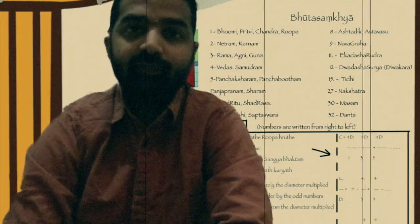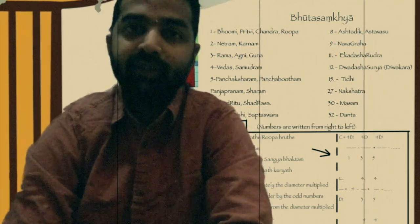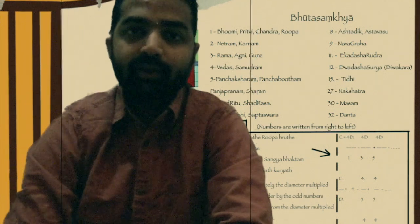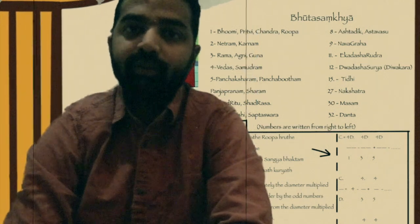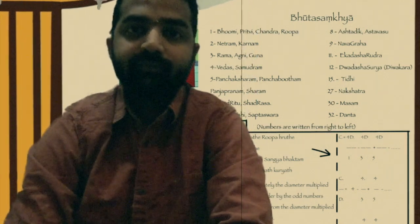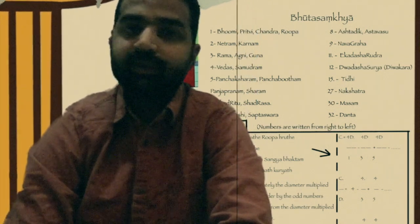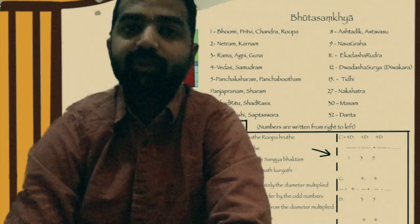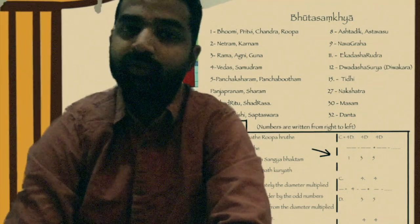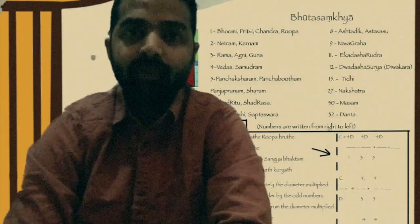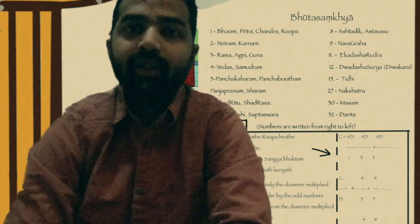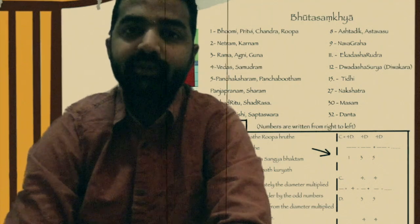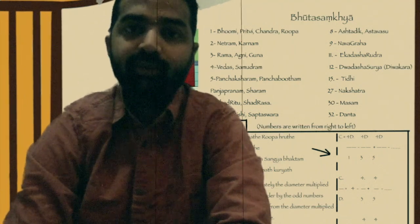Danta — we have got 32 teeth — so, teeth or Danta represents number 32. That's it — very simple. We have learnt the Bhuta-sangya number system. Now, let's take a practical example of the Bhuta-sangya number system.